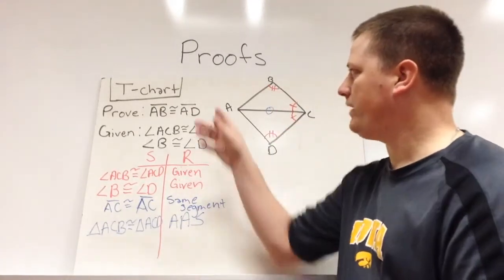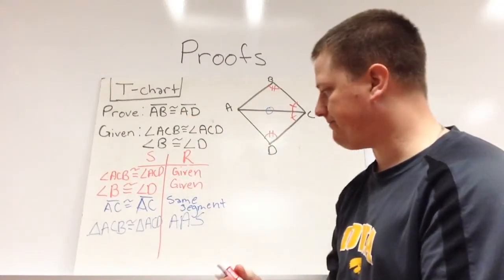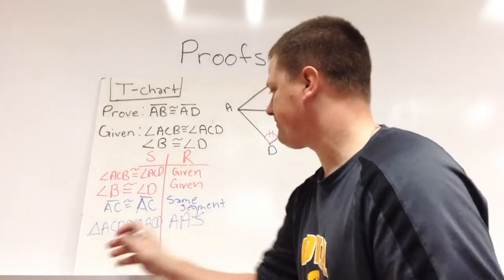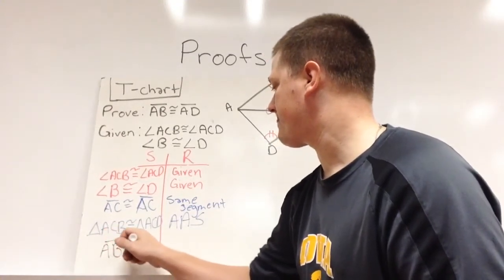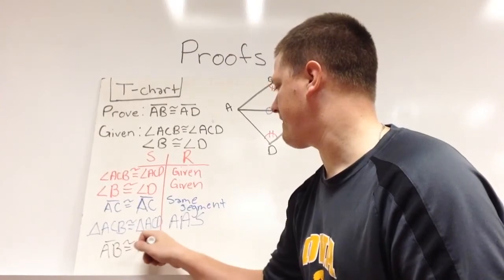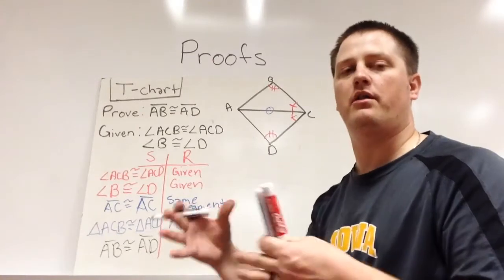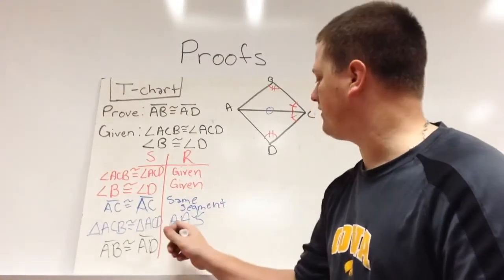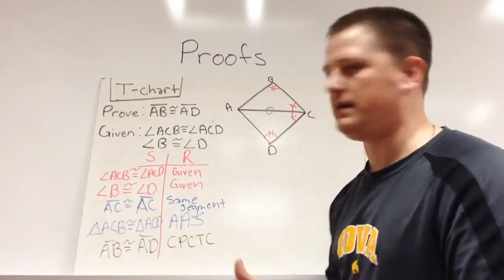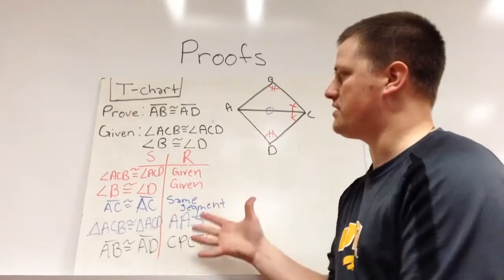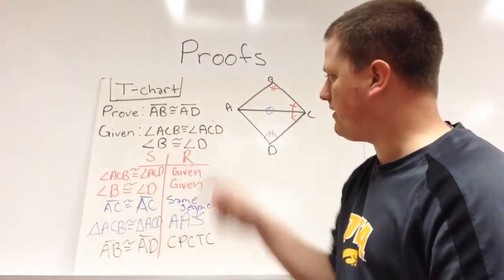Because of that, we can actually prove that AB is congruent to AD. And the reason they're congruent is these two triangles are congruent. So all the parts that match up are congruent, otherwise known as CPCTC. So this is a t-chart proof. It got us to our part that we wanted to prove.